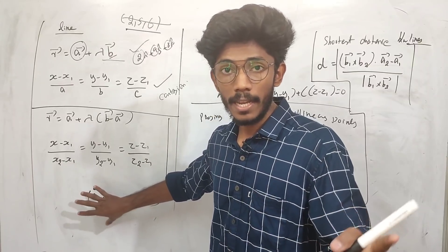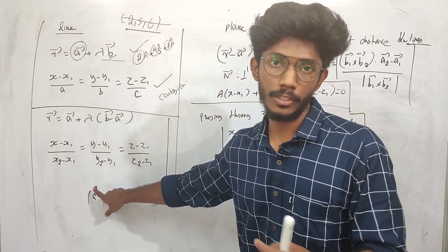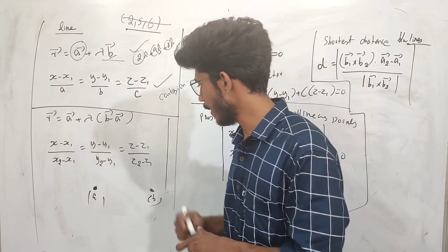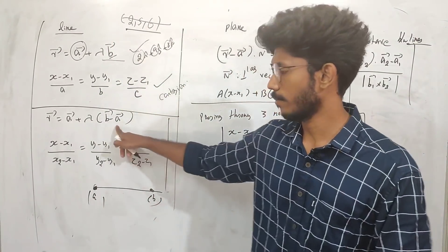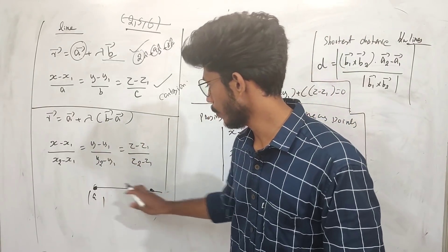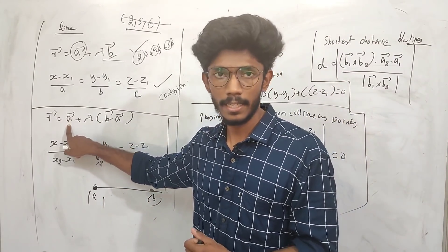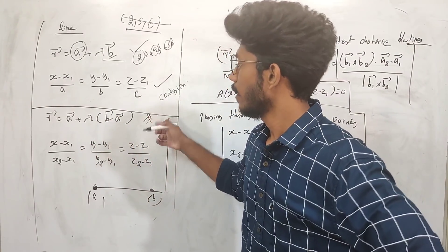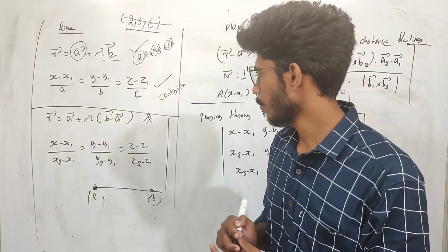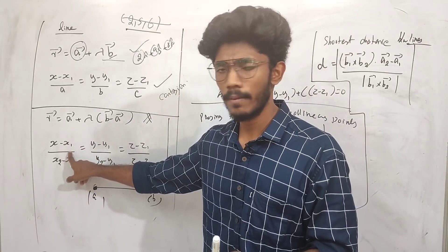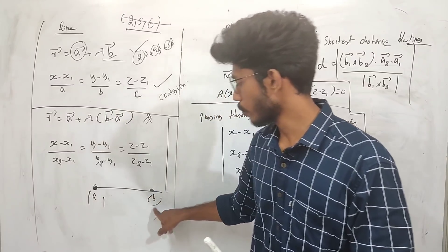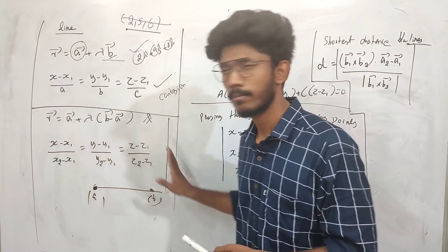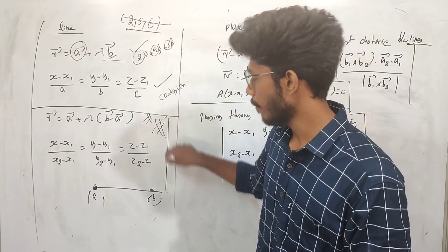Find the vector equation of a line passing through two points. If you pass through two points, you get the vector equation again. The formula for two points is R = a + λ(b − a). The second formula, the Cartesian form, is: (x − x1)/(x2 − x1) = (y − y1)/(y2 − y1) = (z − z1)/(z2 − z1).